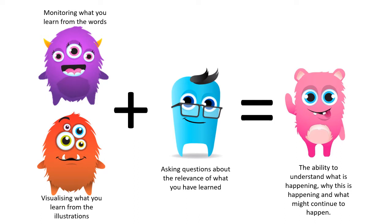I've got a little maths equation here, so bear with me as I explain it. The first thing you do when you see anything is you monitor it. We monitor words and we visualise illustrations. Front covers of books have both — the title and any illustrations. We've got to remember that even though we're in Year 6, we don't just discount looking at illustrations. Every single illustration in a book is there for a reason.